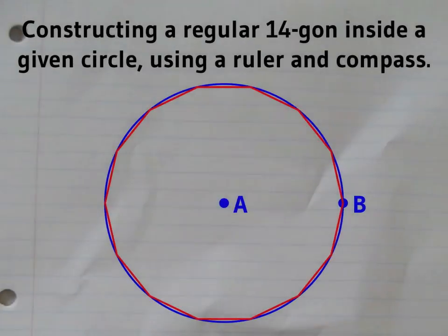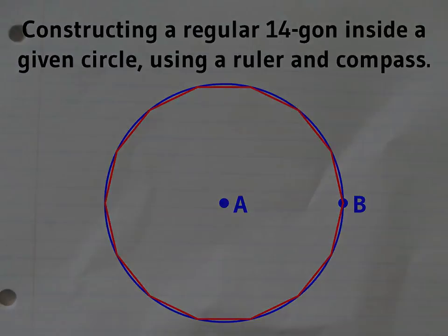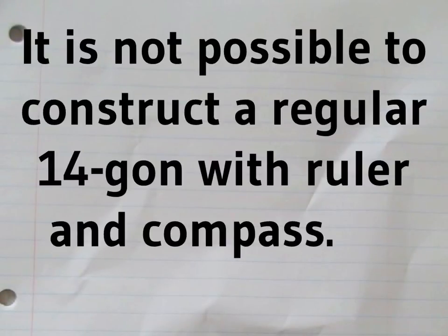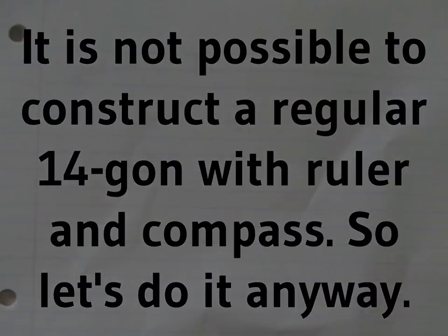If you want to construct a regular 14-sided polygon with a ruler and a compass, there's good news and bad news. The bad news is, it's not possible to do exactly. The good news is, you can get as close as you'll ever need with the instructions in this video.